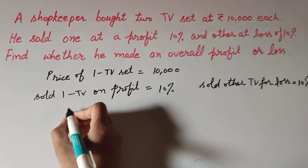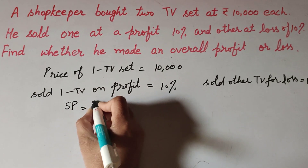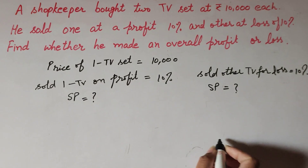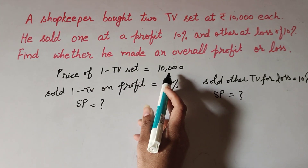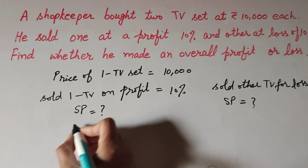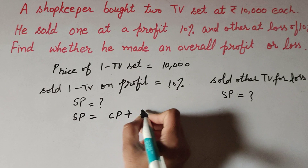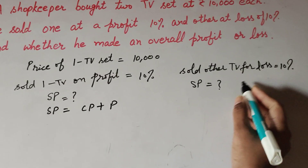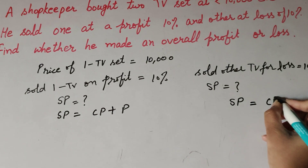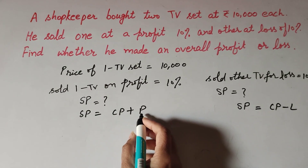To find profit or loss in the transaction, we need to find the selling price of both TVs. The cost price of each is 10,000. The selling price formula for a profit case is: selling price equals cost price plus profit. For the loss case: selling price equals cost price minus loss.